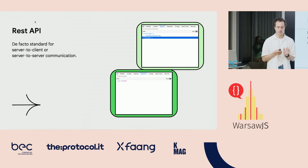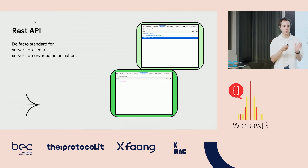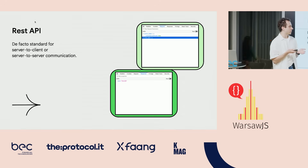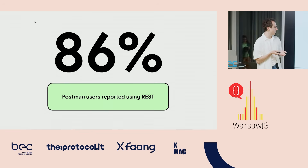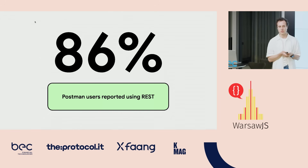When we started doing backends, there was REST API — it's the most used API protocol. You just have requests, you have a few methods, and you can just communicate with your server. It's used by 86% of users, so it's a pretty huge amount.